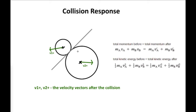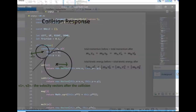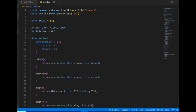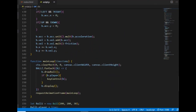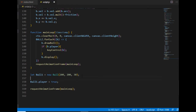To evaluate what that vector is, I will use two physical laws: the conservation of kinetic energy and the conservation of momentum. I go back to the code now and first I create a new ball object so that I will have two on the canvas.